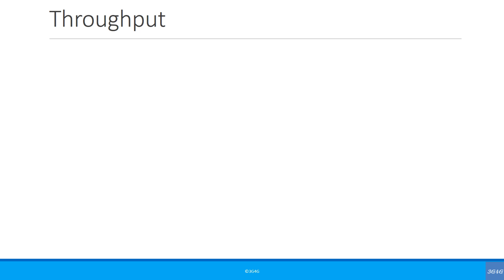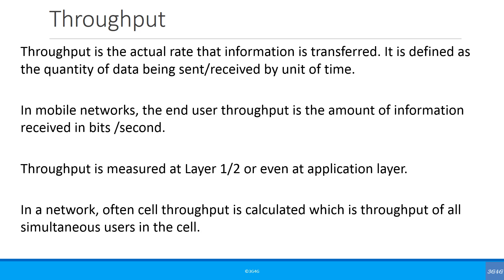Now let's look at throughput. Throughput is the actual rate at which information is transferred, defined as the quantity of data sent or received per unit of time. In mobile networks, end-user throughput is the amount of information received in bits per second, measured at layer 1, layer 2, or even at the application layer. In networks, cell throughput is often calculated, which is the throughput of all simultaneous users in the cell.